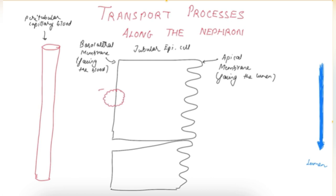The first step is the operation of the basolateral membrane sodium-potassium ATPase pump. It pumps out three sodium ions and pumps in two potassium ions into the cell. This is primary active transport, because ATP is used during the process of transport itself. This lowers the sodium concentration inside the cell.